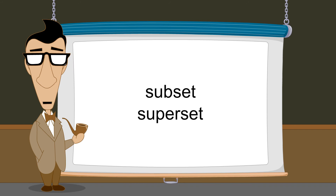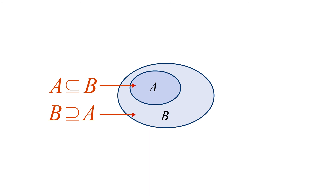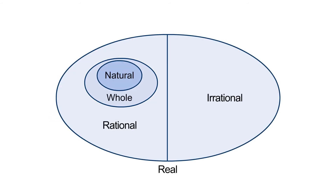Subsets and supersets can also be represented using Venn diagrams. In a Venn diagram, a subset is typically shown as a smaller region within the larger superset. For instance, in this diagram, set A is a subset of B, and set B is a superset of A. If we use a Venn diagram to illustrate the relations between the sets of numbers we have studied in pre-algebra, it might look like this. Remember that in a Venn diagram, although sets are usually represented by circles or ovals, they can be illustrated by any type of enclosed area. This diagram shows that the set of natural numbers is a subset of the set of whole numbers, which is a subset of the set of rational numbers. The union of the set of rational numbers and the set of irrational numbers forms the set of real numbers.